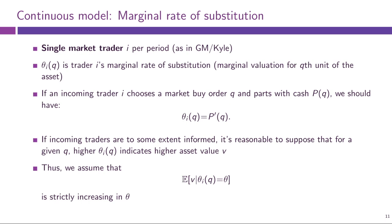On the other side of the market we have the market traders. In this model we assume there is one market trader per period, labeled trader i. What is different from Glosten-Milgram or Kyle is how we model the market trader's decisions. In particular, we assume there is this theta_i(Q), which is trader i's marginal rate of substitution between money and asset — or equivalently, the marginal valuation of the trader for the Qth unit of the asset.